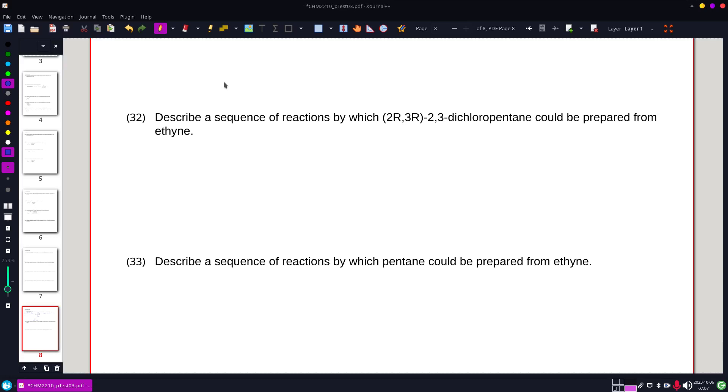Number 32 is very similar to a previous problem of sequencing, but this time I've asked for a specific rotation of a particular structure. So we are going to start this from ethylene, but what I want to get is 2R,3R-2-chloropentane.